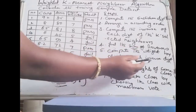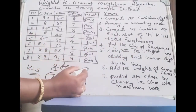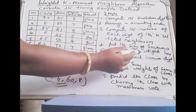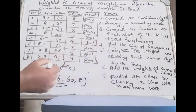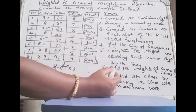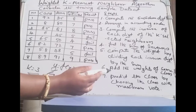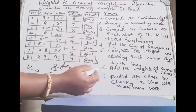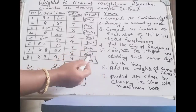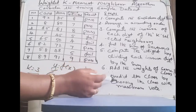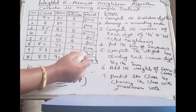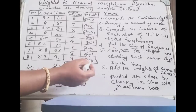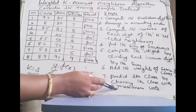Compute the weight by dividing each inverse distance by the sum of all inverse distances of the k neighbors. The next step is to add the weights of instances belonging to the same class — either pass or fail. Finally, predict the class by choosing the class with the maximum total weight. Whichever class has the highest weight is our prediction for the target variable.